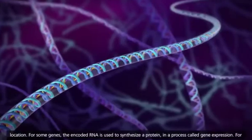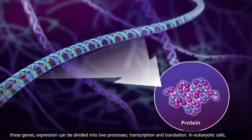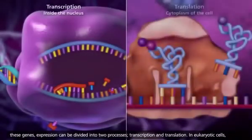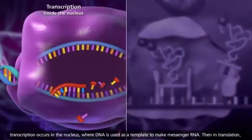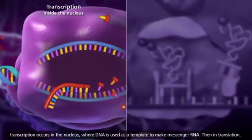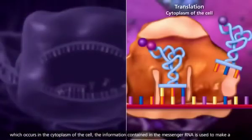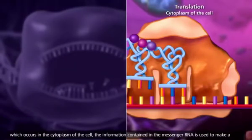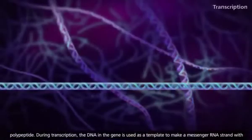For some genes, the encoded RNA is used to synthesize a protein in a process called gene expression. For these genes, expression can be divided into two processes: transcription and translation. In eukaryotic cells, transcription occurs in the nucleus, where DNA is used as a template to make messenger RNA. Then in translation, which occurs in the cytoplasm of the cell, the information contained in the messenger RNA is used to make a polypeptide.